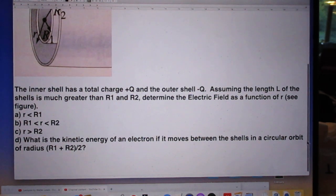And then the last question is: what is the kinetic energy of an electron if it moves between the shells in a circular orbit of radius (R1 + R2) divided by 2?